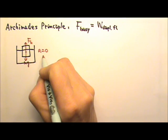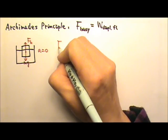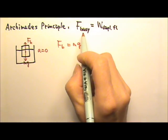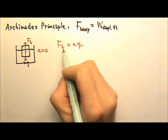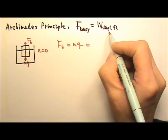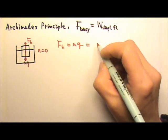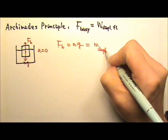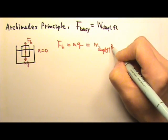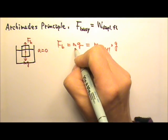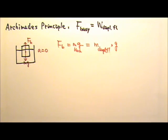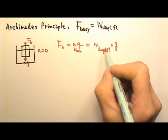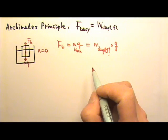Because the acceleration is zero, the upward force equals the downward force. And according to the Archimedes principle, the buoyant force also equals the weight of the displaced fluid, which means it equals the mass of the displaced fluid times g. This is also the mass of the block times g, so we can cancel the g's. The mass of the block equals the mass of the displaced fluid.